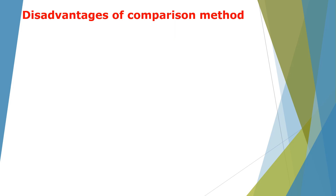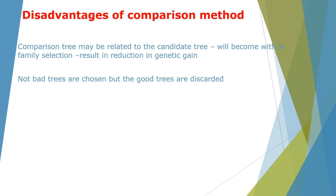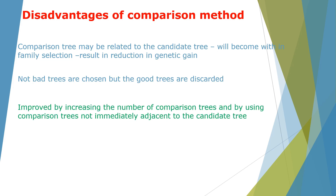Having a comparison tree in a tree selection program does come with some disadvantages. For example, a comparison tree may be related to the candidate tree, which essentially becomes a within-family selection, resulting in a reduction in genetic gain. Sometimes you choose trees that aren't the best because they appeared mature and healthy, while skipping younger trees that could have been much better. However, this can be improved by having multiple comparison trees or selecting trees that are not immediately adjacent to the candidate tree.